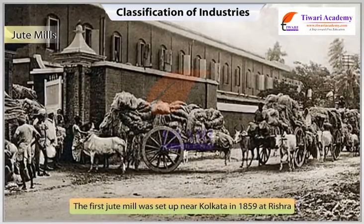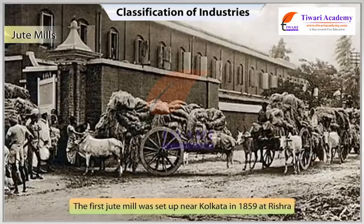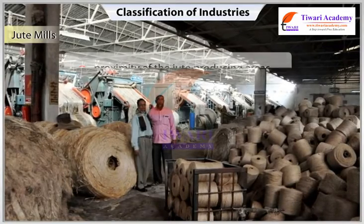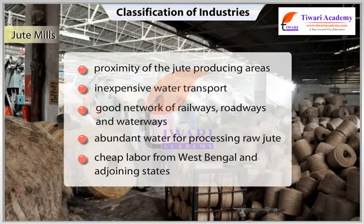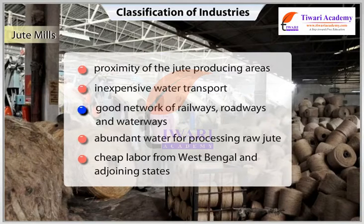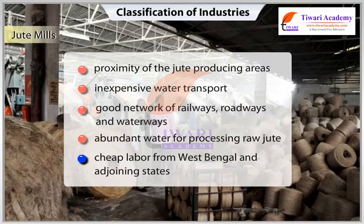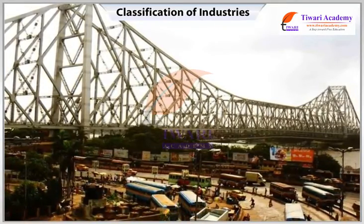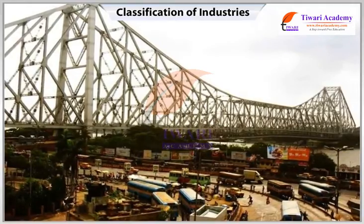The first jute mill was set up near Kolkata in 1859 at Rishra. Reasons for setting up jute mills in the Hooghly basin include: proximity to jute-producing areas, inexpensive water transport supported by a good network of railways, roadways, and waterways to facilitate movement of raw material, abundant water for processing raw jute, and cheap labor from West Bengal and adjoining states of Bihar, Orissa, and Uttar Pradesh.